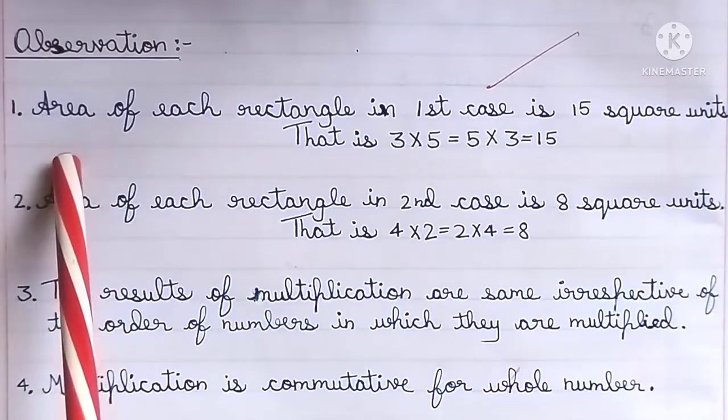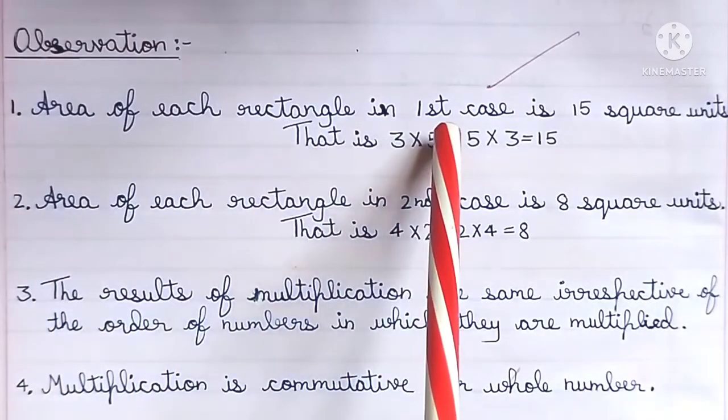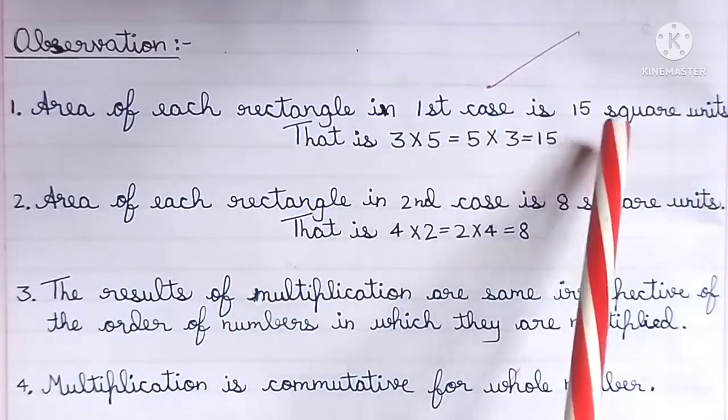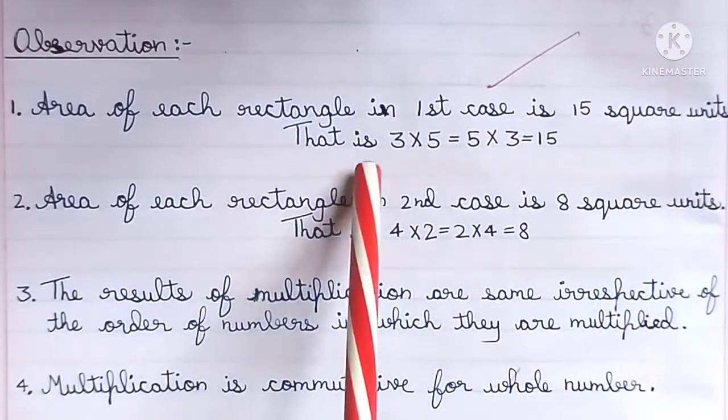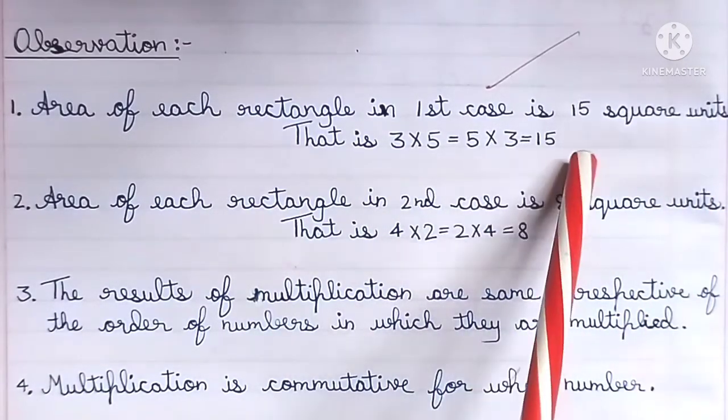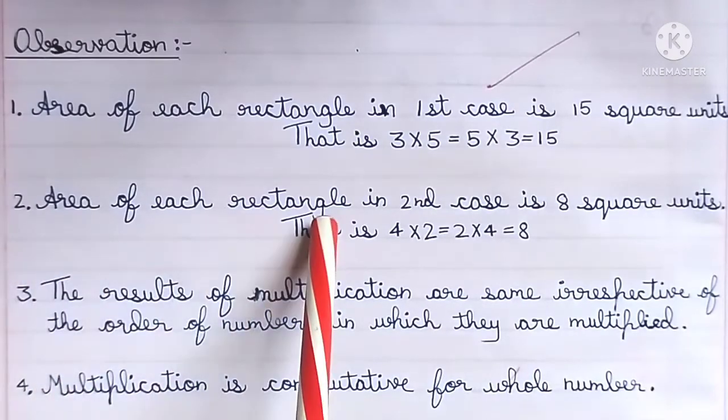Observation: Area of each rectangle in the first case is 15 square units. That is, 3 × 5 = 5 × 3 = 15.